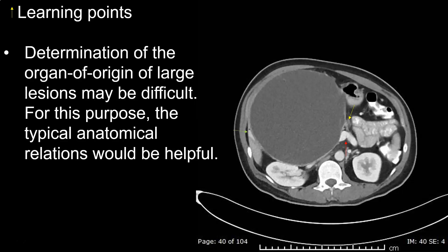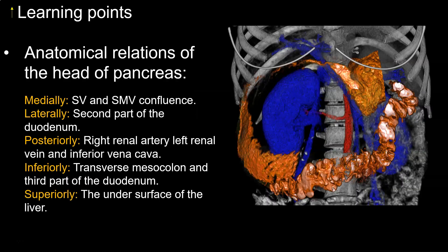The learning points are: determination of the organ of origin of large lesions may be difficult; typical anatomical relations would be helpful. In this case, the typical anatomical relations of the pancreatic head, in addition to the absence of the pancreatic head itself being replaced by the lesion, atrophic changes, and dilatation of the pancreatic duct at the body and tail. The pancreas is in a vital location with very complex anatomical relations. The most important landmarks for imaging displacement are: medially, the splenic vein and superior mesenteric vein confluence forming the portal vein; laterally, the second part of the duodenum.